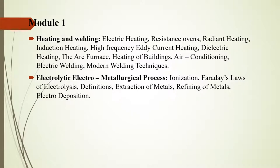Coming to the syllabus: Module 1 has two main topics — heating and welding, and electrolytic/electrometallurgical processes. In heating and welding, the application of electric energy for heating and welding is studied. Based on the principle used, you have different electric heating methods: resistance heating, dielectric heating, induction heating, eddy current heating, and arc heating. The types include resistance ovens, radiant heating, and induction heating.